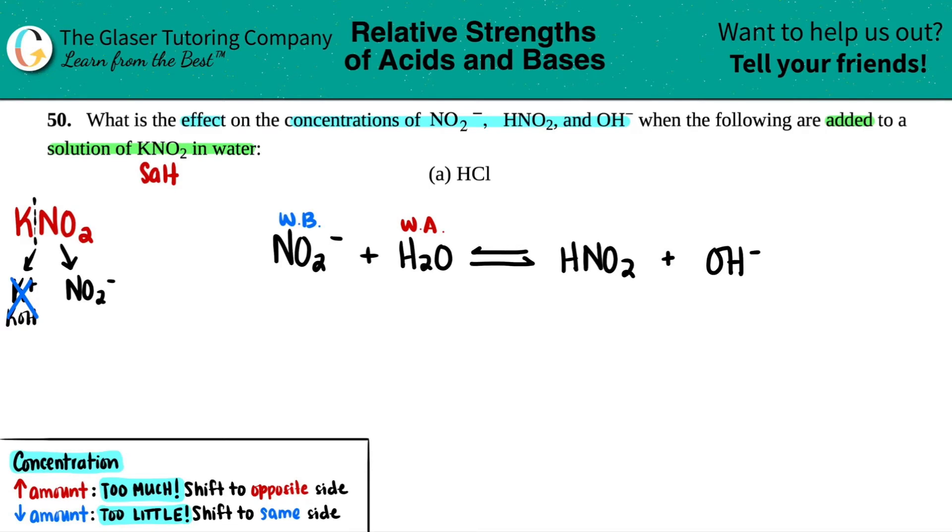Now we just have to figure out what's going to happen to these three concentrations when HCl is added. So HCl, you have to break it down just like we did over here, just to see what's really going on. Usually when we do break this down, one of the ions, and in this case, H plus and Cl minus, hopefully one of the ions is in this balance equation, but it's not. I don't see any H plus in here and I don't see any Cl minus.